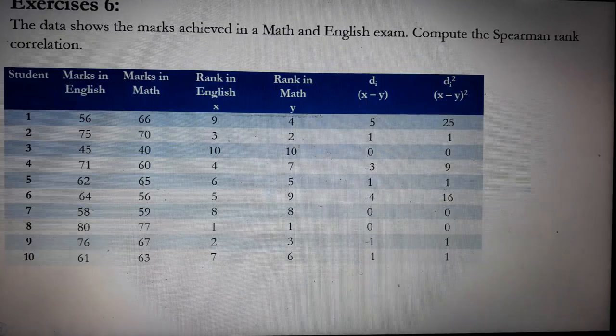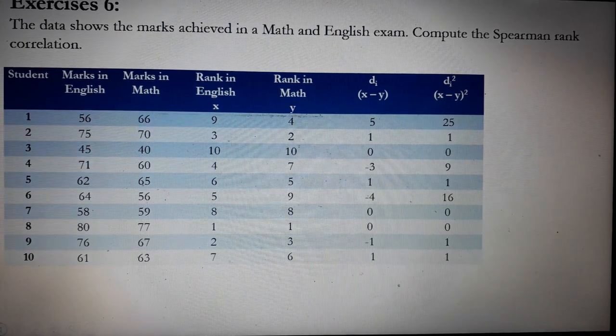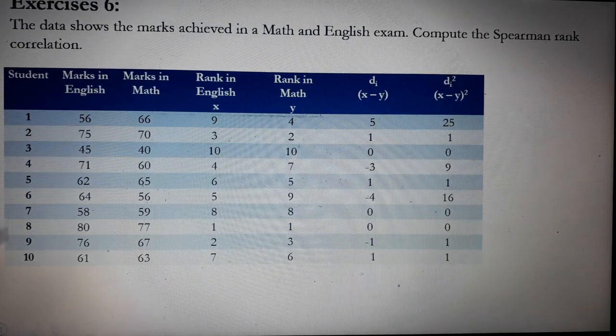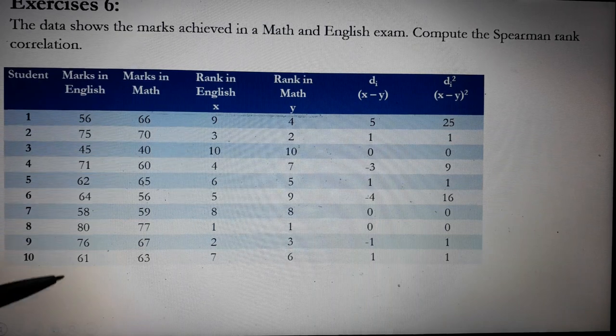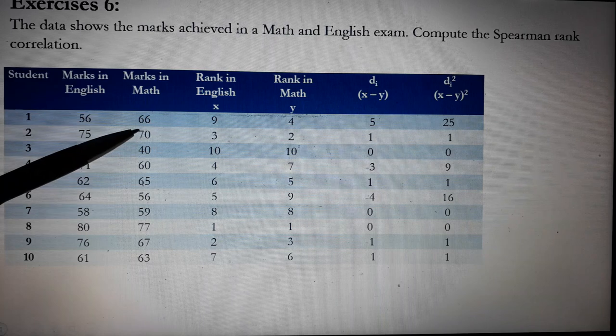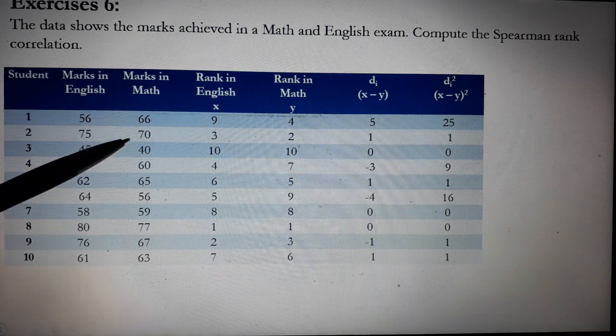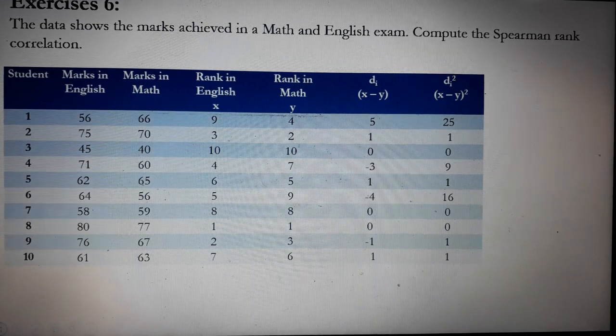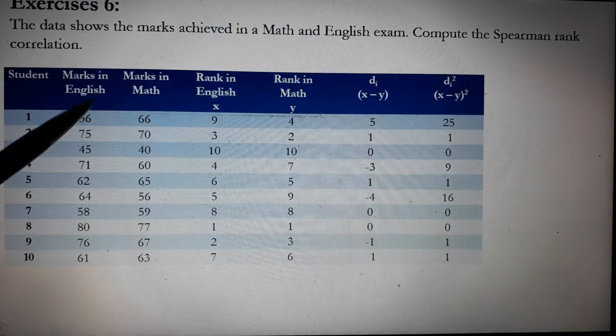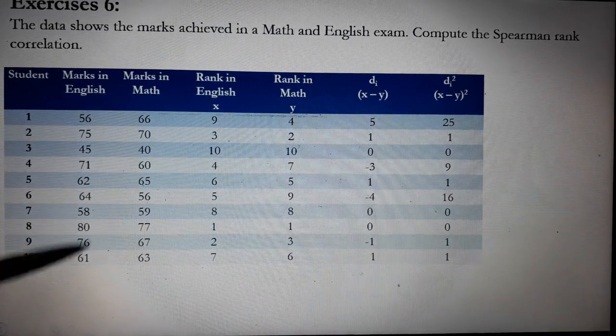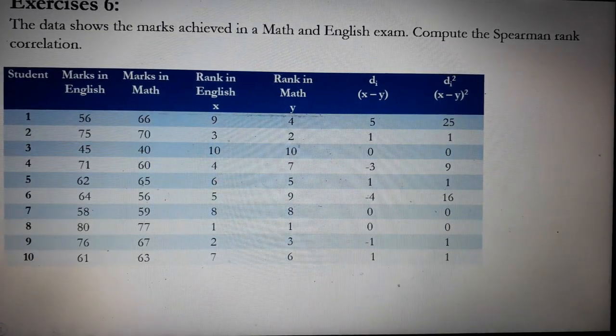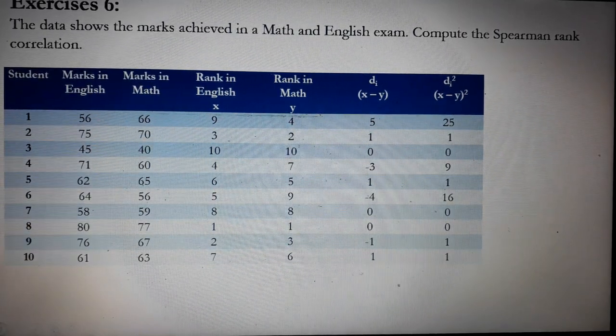So how do we solve for the Spearman Rank Correlation? We will place our data in the table. But I have completed the values already. But let me explain. So this represents the students. So we have 1 to 10 students. These are the marks in English. Again, our first student got 56 in English and 66 in math. Second student, 75 in English, 70 in math, and so on. Now this column is labeled as Rank in English. In other words, the ranking of the marks in English should be placed in this column. And it is labeled as X.